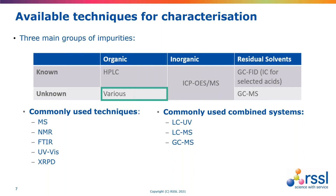There are a wide variety of analytical techniques that can be used to identify and characterize these impurities. We tend to group impurities in three main sections: organic compounds (those with carbon, nitrogen, oxygen, etc.); inorganic compounds such as elemental impurities, frequently identified by ICP-MS and OES; and residual solvents, identified using GC-FID, ion chromatography, or GC-MS. Today in this webinar, we'll concentrate more on the organic impurities.